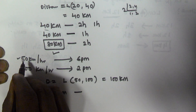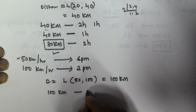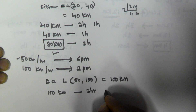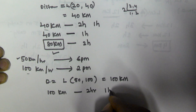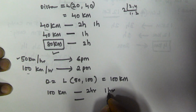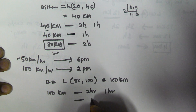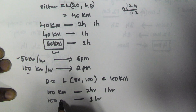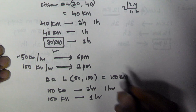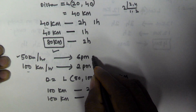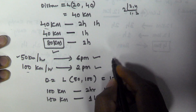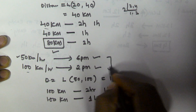On the first day he is travelling with 50 kmph, so he will take 2 hours. On the second day he is travelling with 100 kmph, so he will take 1 hour. The difference between 1 hour and 2 hours is 1 hour. But actually on the first day he is reaching at 6 pm and on the second day at 2 pm, so the actual difference is 4 hours.